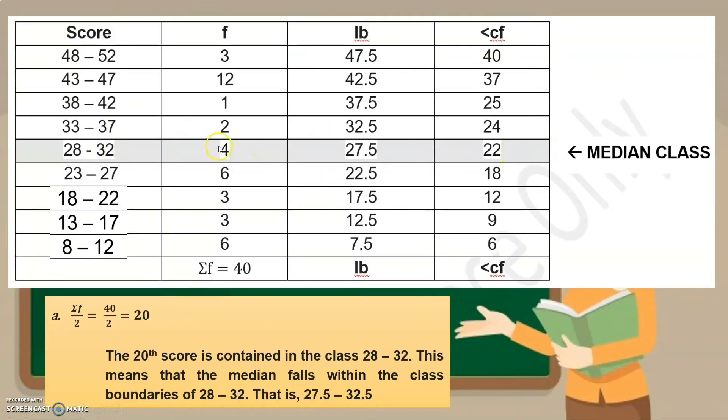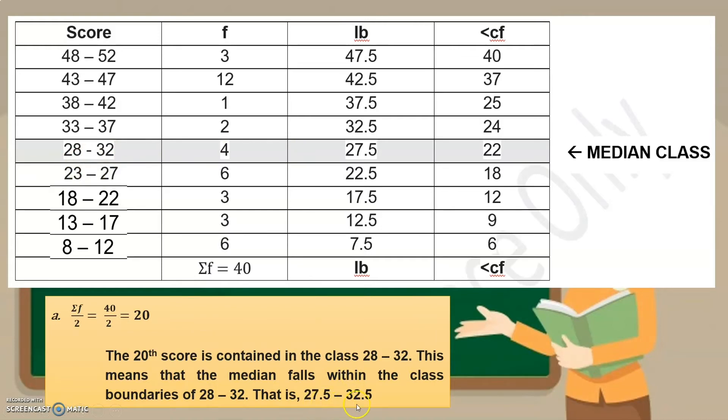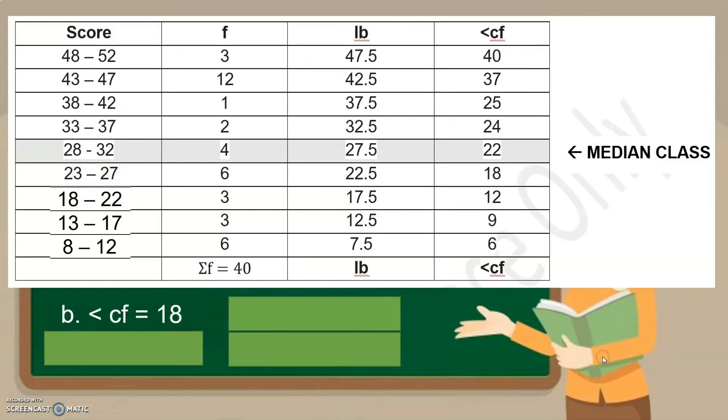Okay. So, i-click ko na lang muna yung table. So, ang kailangan na lang muna natin itong lower boundary at itong CF and F and then the score. So, again, ayan, nakuha nga natin yung 20, di ba? The 20th score is contained in the class 28 to 32. This means that the median falls within the class boundaries of 28 to 32. And that is 27.5 to 32.5. Okay. So, kailangan natin munang alamin kung ano ba yung mga value na ilalagay natin doon sa computation ng median class. Yung CF natin, since nandito nga tayo, ito nga yung median class natin, kasi kailangan natin yung median class kasi dito tayo magbe-base ng mga value na ilalagay natin doon sa formula. Okay. Okay. CF is 18.